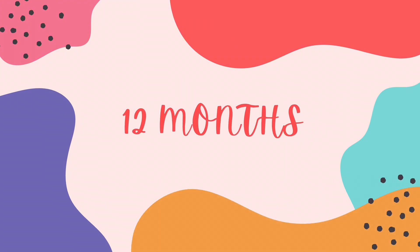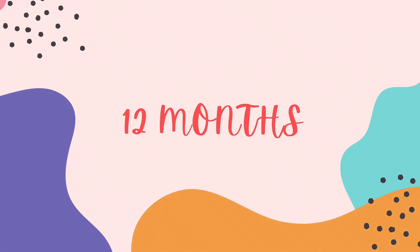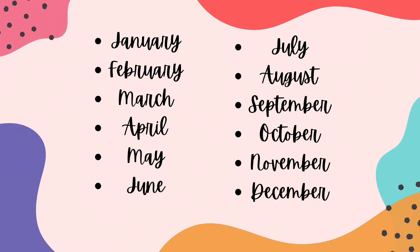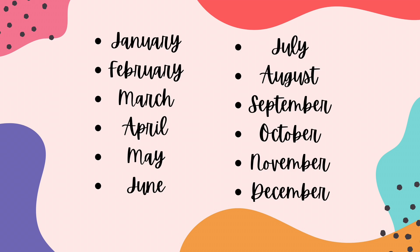There are 12 months in the year. They are January, February, March, April, May, June, July, August, September, October, November, and December.